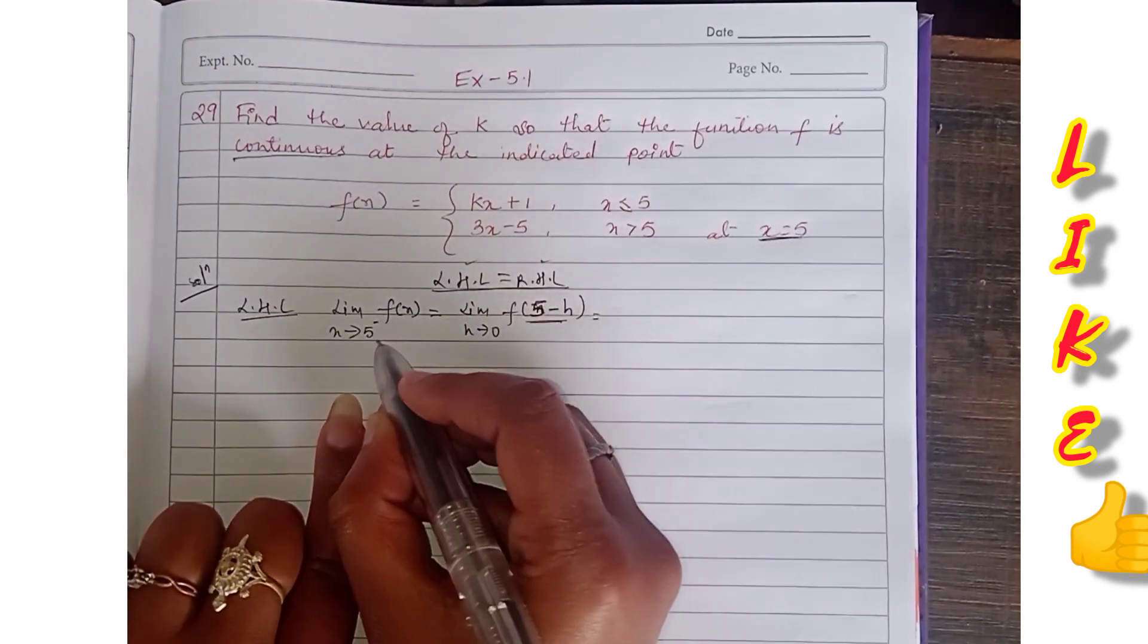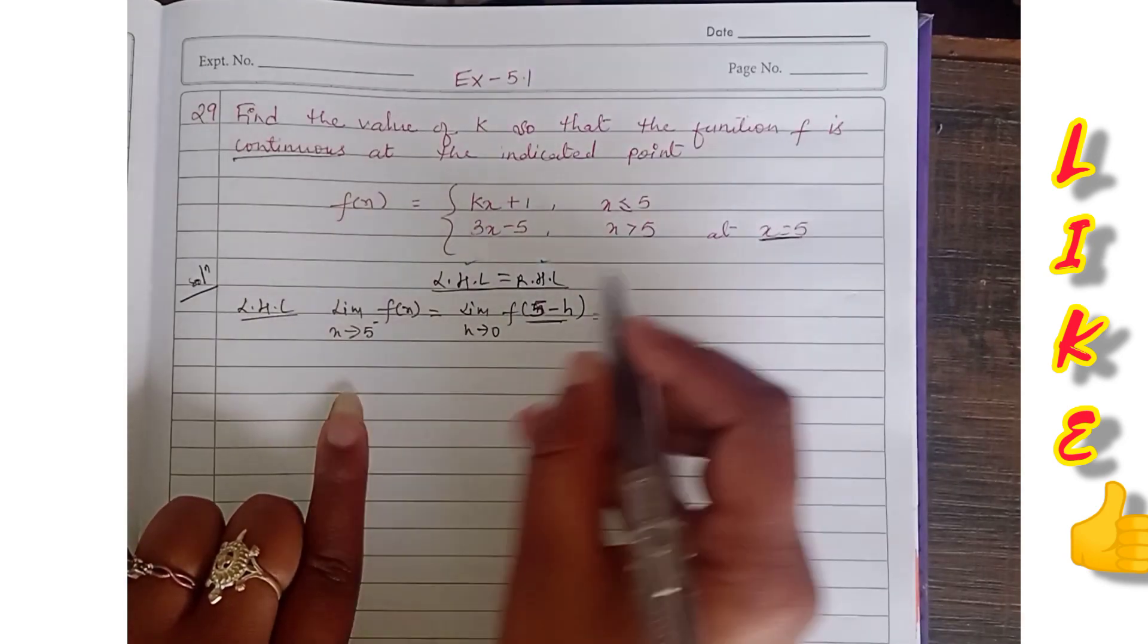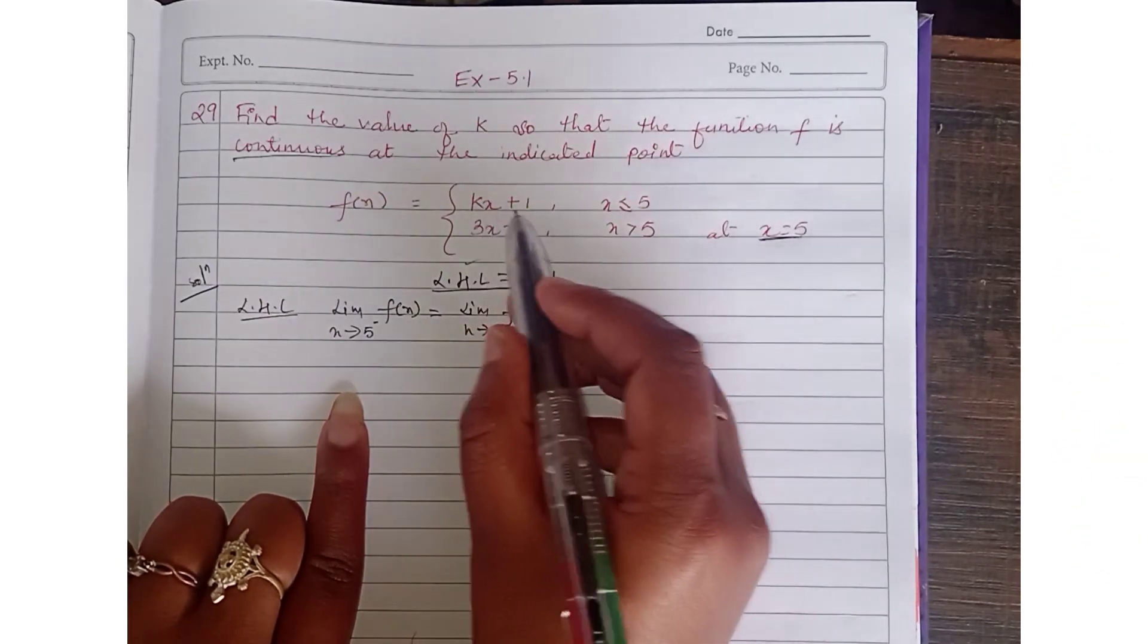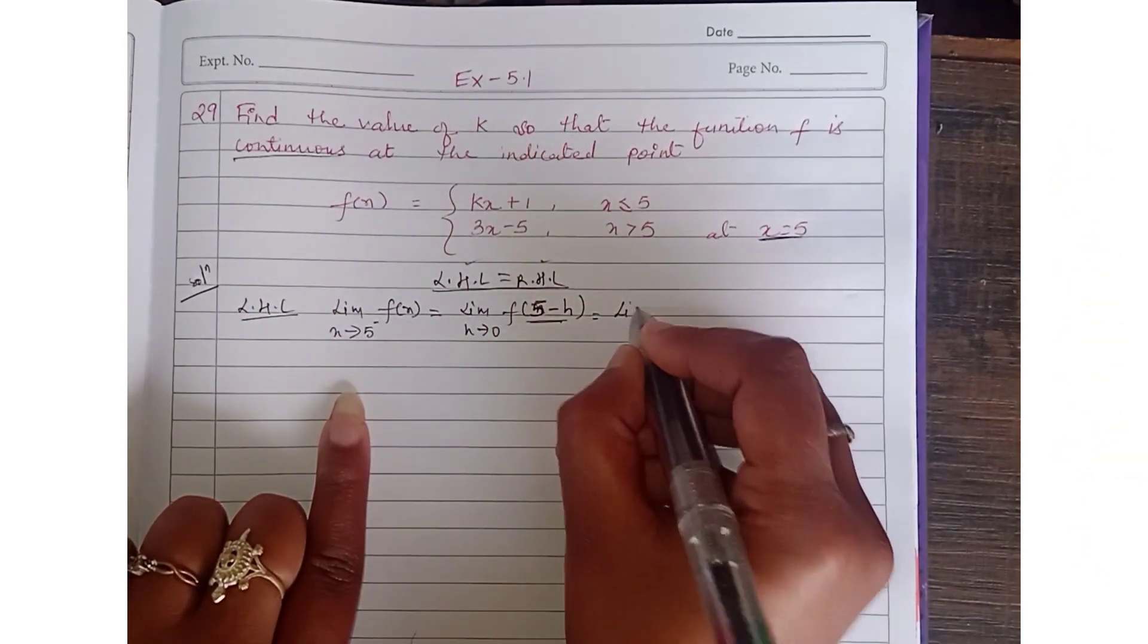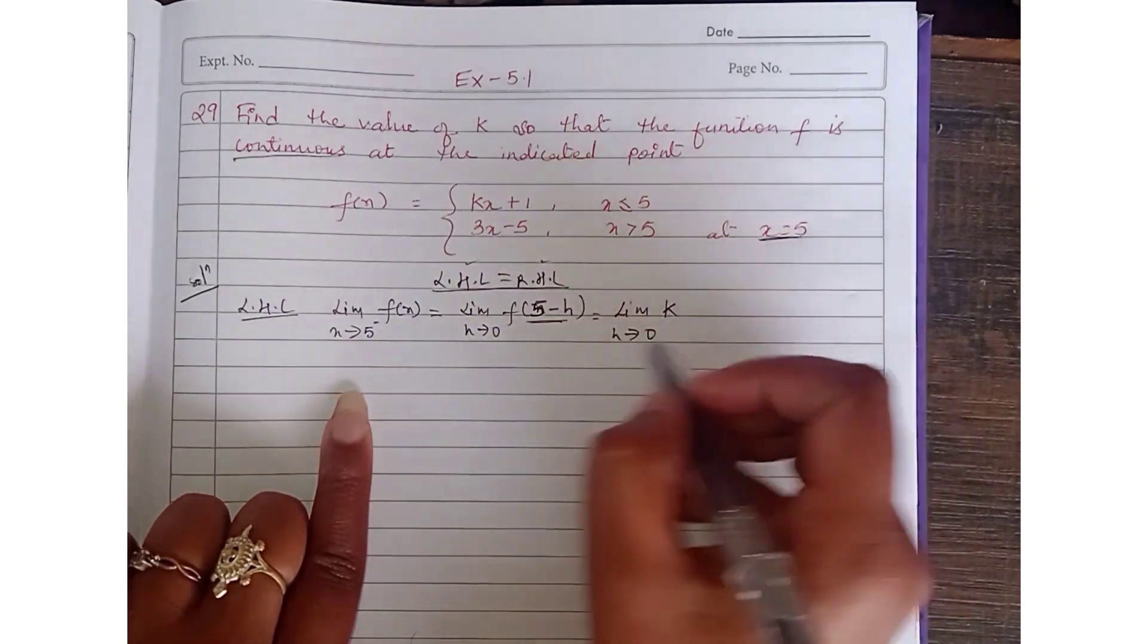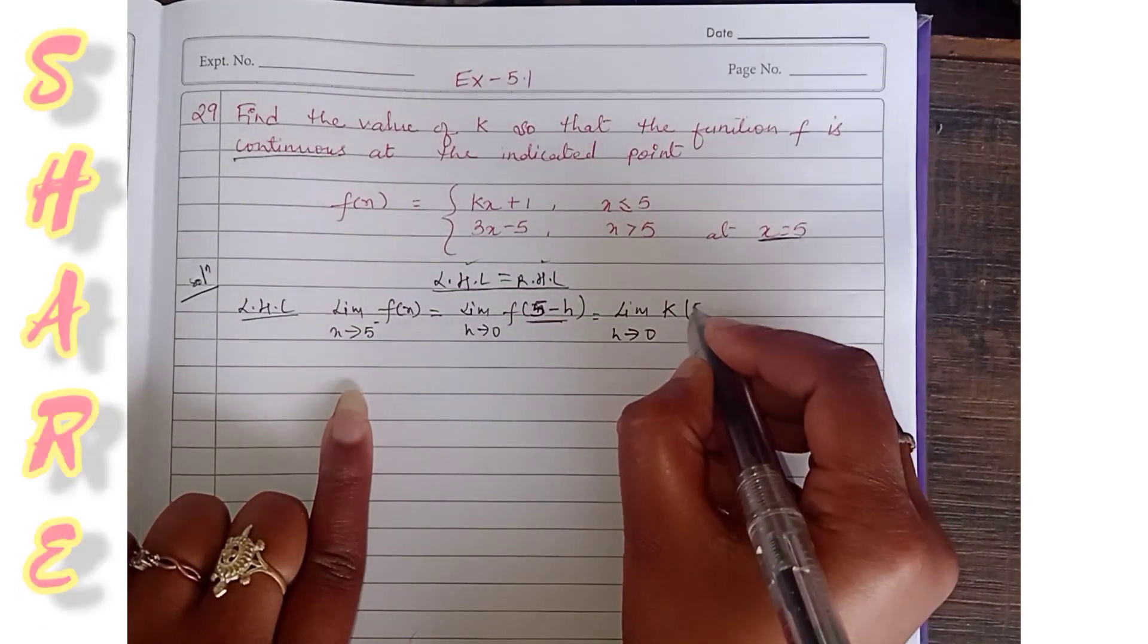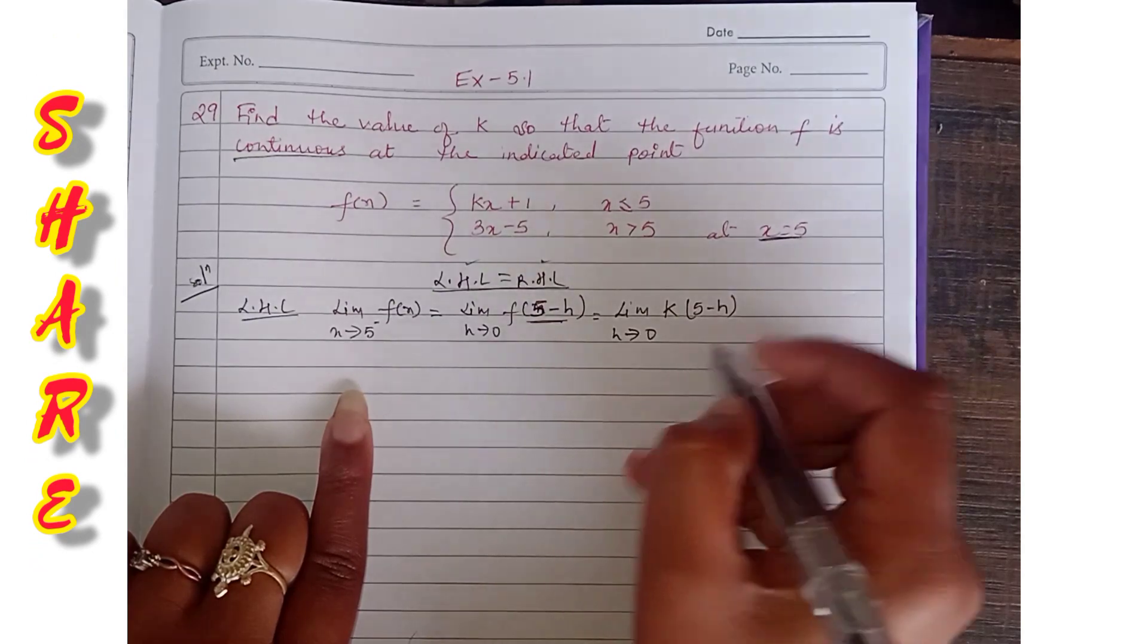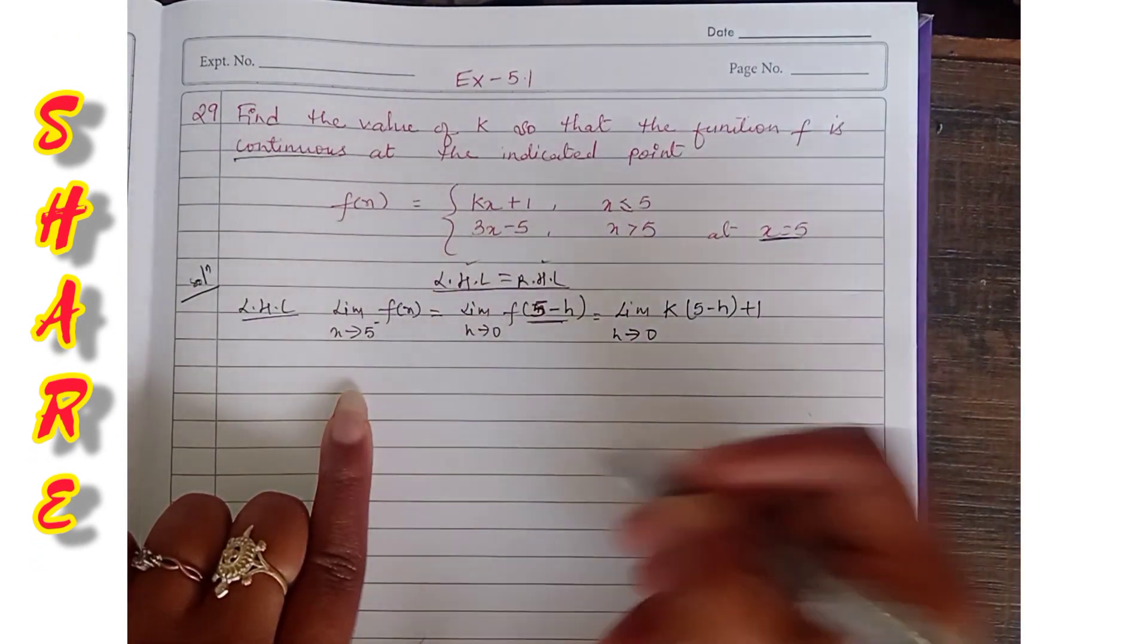k times (5 minus h) plus 1. This is the left hand limit. When h tends to 0, 5 minus 0 is 5.